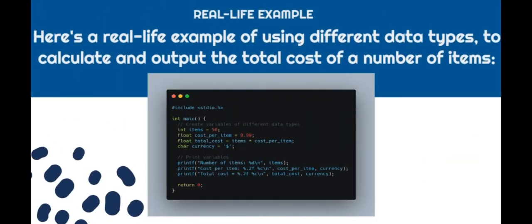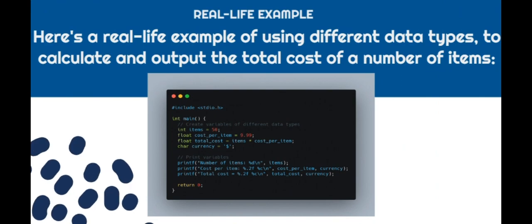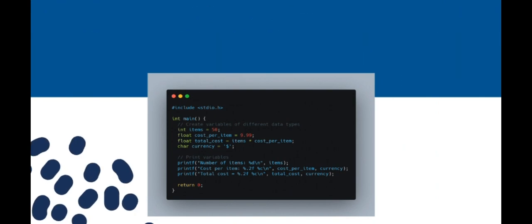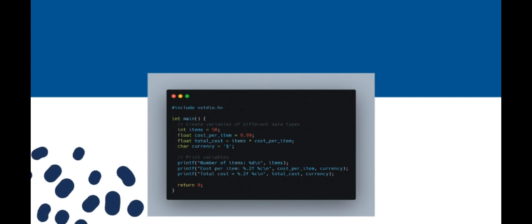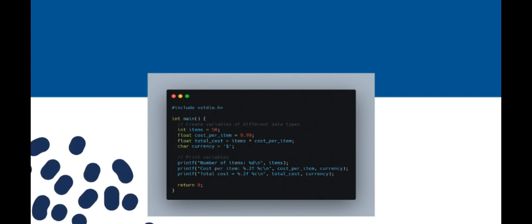Now let's take a real life example. Here's a real life example of using different data types to calculate and output the total cost of a number of items. First of all, I need to create variables of different data types: an integer, a decimal number, and a dollar character, and use the float to calculate the total cost. And finally, we will print our variables to find the total.